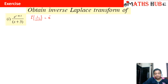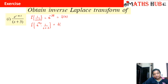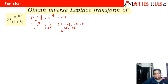The inverse Laplace of 1 upon s plus 3 is e raised to power minus 3t. I name this f(t). So the inverse Laplace of e raised to power minus pi s into 1 by s plus 3 becomes f(t minus pi) into u(t minus pi). Replacing t with t minus pi in f(t), the answer is e raised to power minus 3(t minus pi) multiplied by u(t minus pi).